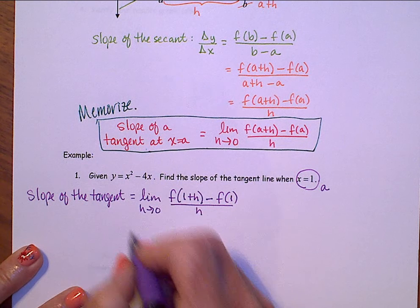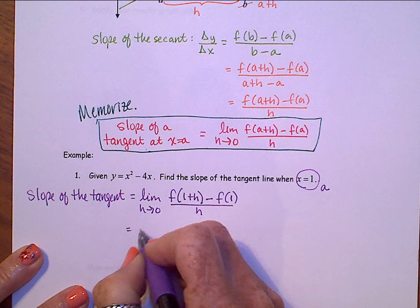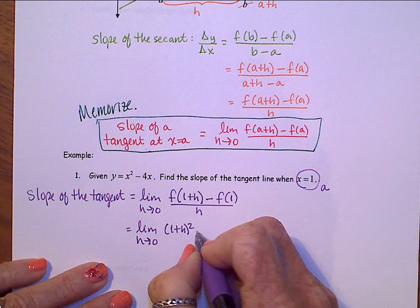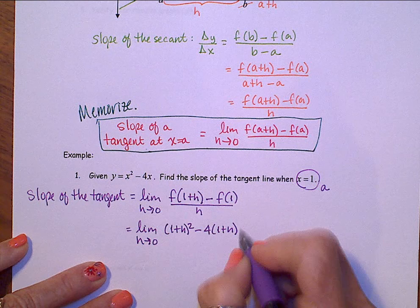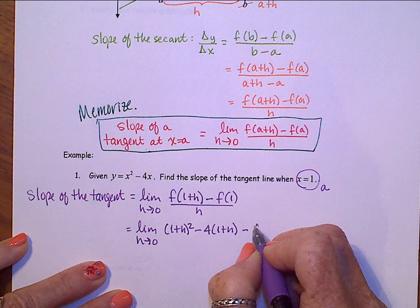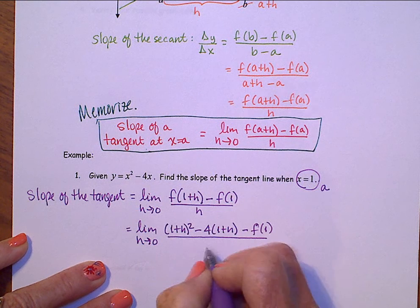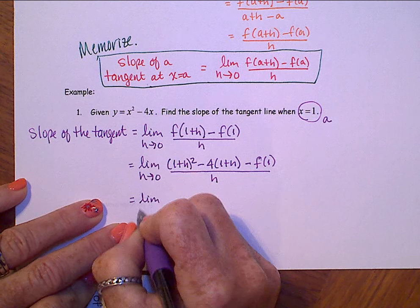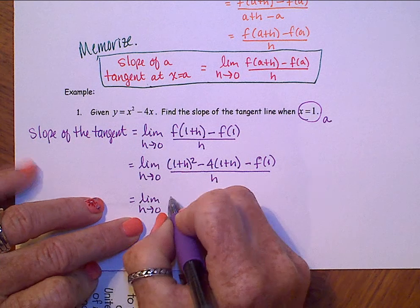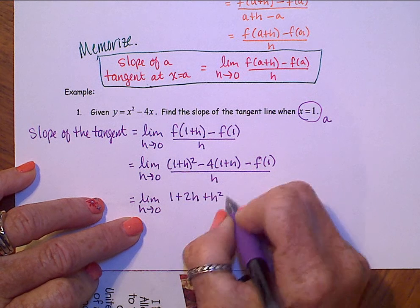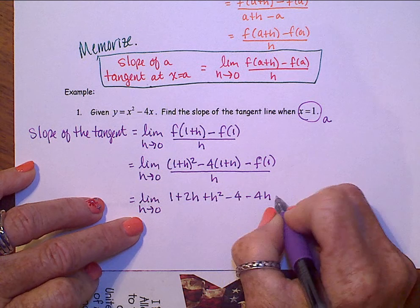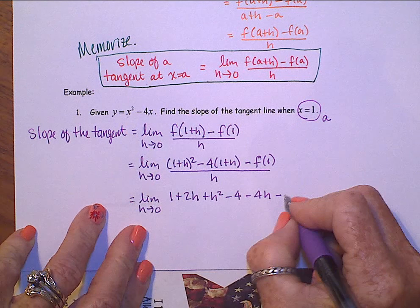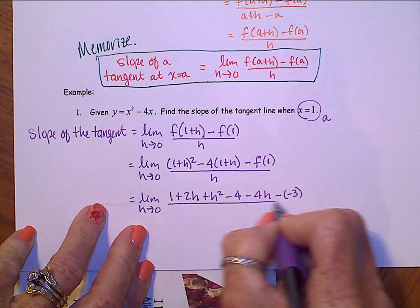And now we'll go ahead into this equation and evaluate f of 1 plus h. It's going to be 1 plus h squared minus 4 times 1 plus h minus f of 1. So we're going to have to take 1 and plug it in here. That's 1 minus 4. That would be a negative 3.